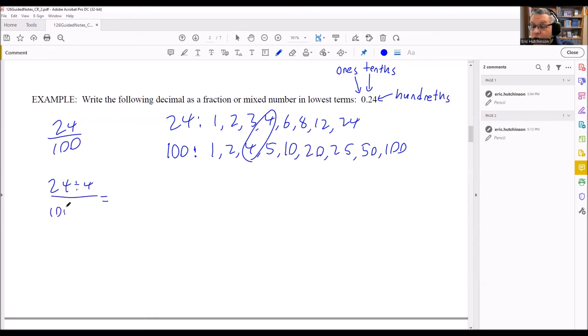And we're going to do 100 divided by 4. 24 divided by 4 is 6, 100 divided by 4 is 25. Nothing else divides into those, so that means that would be the fraction written in lowest terms.